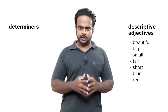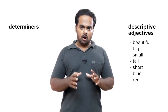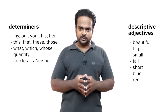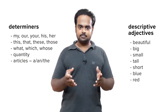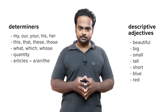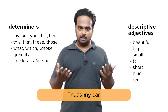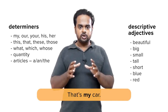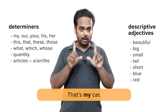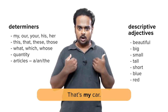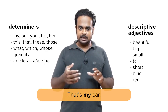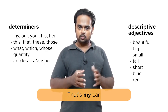So what are determiners? Well, determiners are a small group of grammar words that act as adjectives. Words like my, our, your, his, her, etc. are determiners. When I say 'that's my car,' for example, the word 'my' shows that I'm not talking about any car — I'm talking about one particular car, my car. So the word 'my' acts as an adjective by giving information about the noun 'car.'